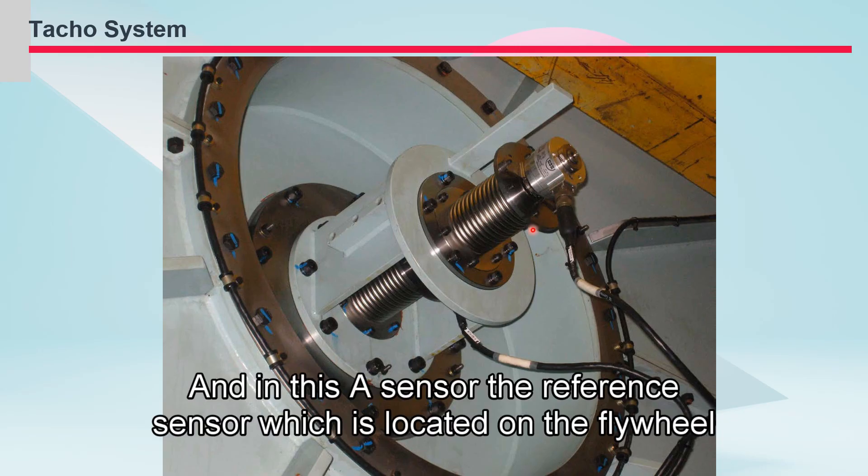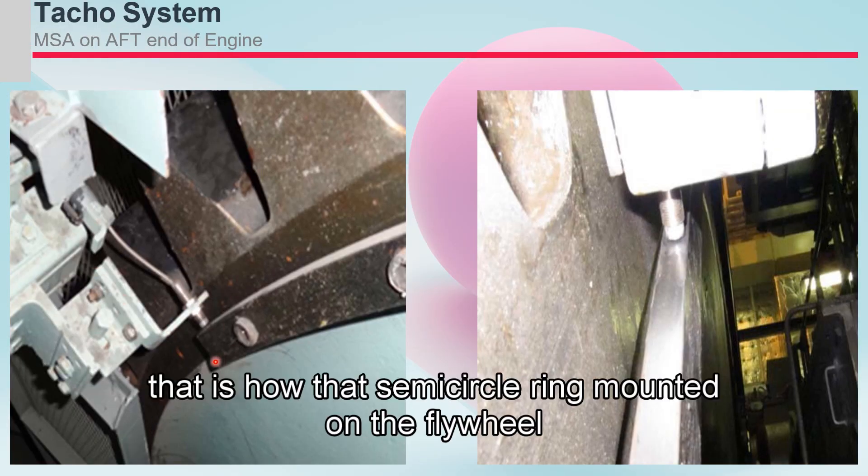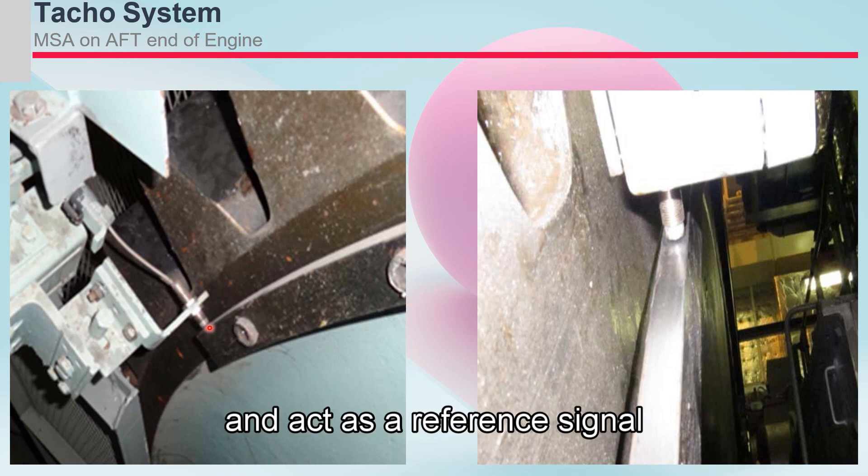And in the A sensor, the reference sensor which is located on the flywheel, that is how that semicircle ring is mounted on the flywheel. And this sensor is aligned, giving 90 degrees shifted from the TDC position and acts as a reference signal.